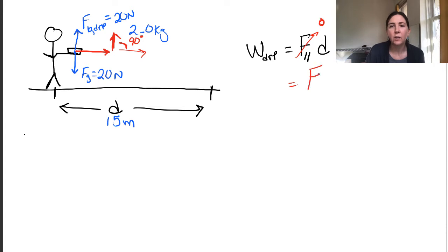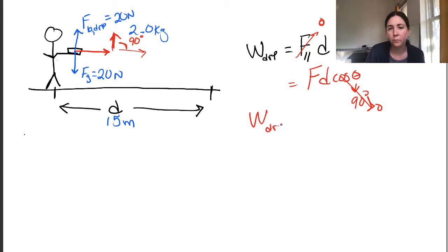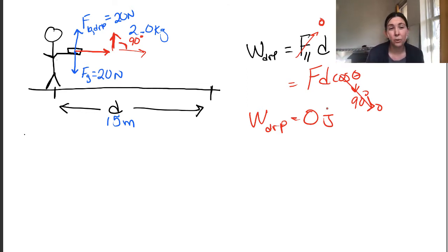I like to think of it as W = Fd cosine theta. The work done by Dr. P is 20 newtons times 15 meters times the cosine of 90 degrees, which is zero. So I do no work on the book as I'm walking across the room, which is kind of counterintuitive.